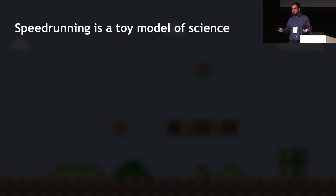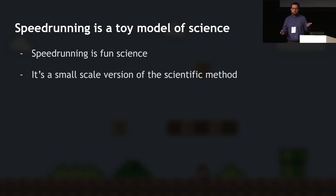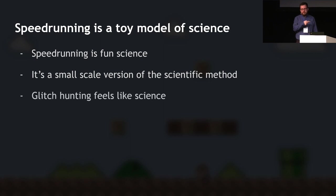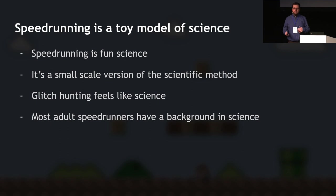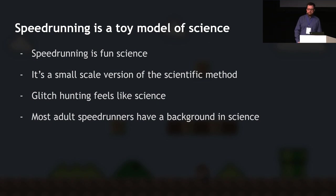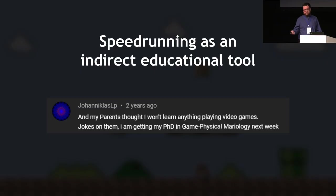In comparison, scientific discovery uses the same scientific method. Discovery is inspiring and empowering — arguably more so than glitch hunting, but definitely a similar feeling when you're finding new things. However, it's an extremely high investment of time and effort — people can spend decades researching certain things without reaching results. And the results are obviously far more meaningful. This is why in my opinion speedrunning is a bit of a toy model of scientific endeavors: it's a fun, small-scale version of the scientific method that still uses a lot of scientific concepts.